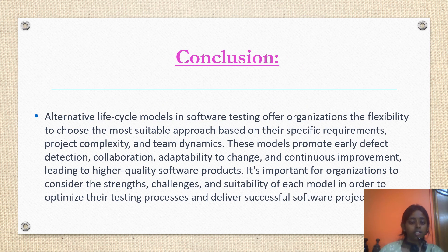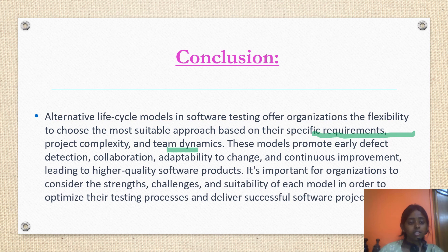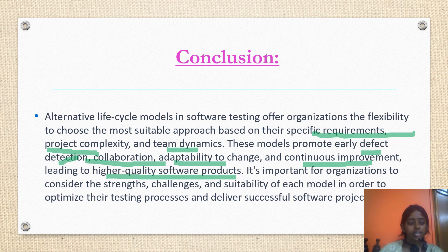In conclusion, alternative lifecycle models in software testing offer organizations the flexibility to choose the most suitable approach based on their specific requirements, project complexity and team dynamics. These models promote early defect detection, collaboration, adaptability to change and continuous improvement, leading to higher quality software products. It is important for organizations to consider the strengths, challenges and sustainability of each model in order to optimize their testing processes and deliver successful software projects.